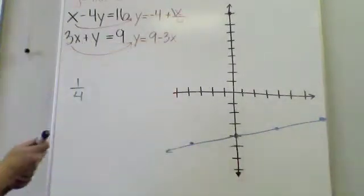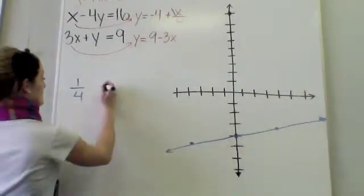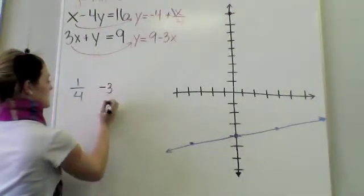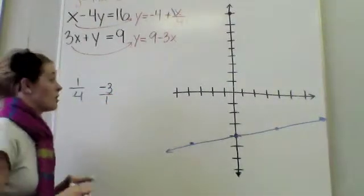All right, now I've got to do the purple equation, my purple line. Now, he has a slope of negative 3. So that's really being divided by 1. So my y will go down by 3, and my x will go over 1.